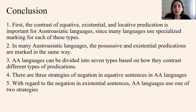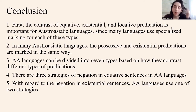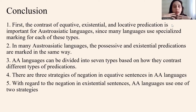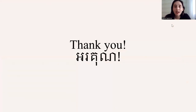Here are my conclusions. First, the contrast of equative, existential, and locative predication is important for Austroasiatic languages, since many languages use specialized marking for each of these types. In many Austroasiatic languages, possessive and existential predications are marked in the same way. Austroasiatic languages can be divided into seven types based on how they contrast different types of predications. There are three strategies of negation in equative sentences, and with regard to negation in existential sentences, Austroasiatic languages use one of two strategies. Thank you.